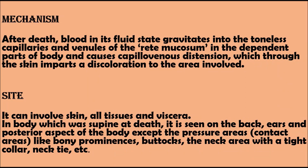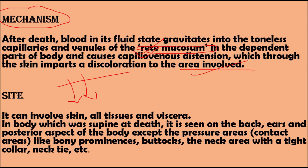The mechanism of hypostasis: after death, blood in its fluid state gravitates into the toneless capillaries and venules of the rete mucosum, which is the deepest layer of the epidermis. Blood gravitates into this deepest layer and into the dependent parts of the body, causing capillary-venous distension, which through the skin imparts discoloration to the area involved.